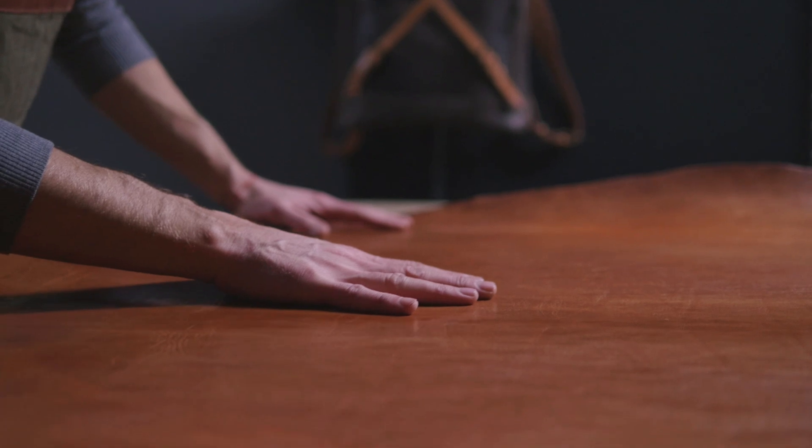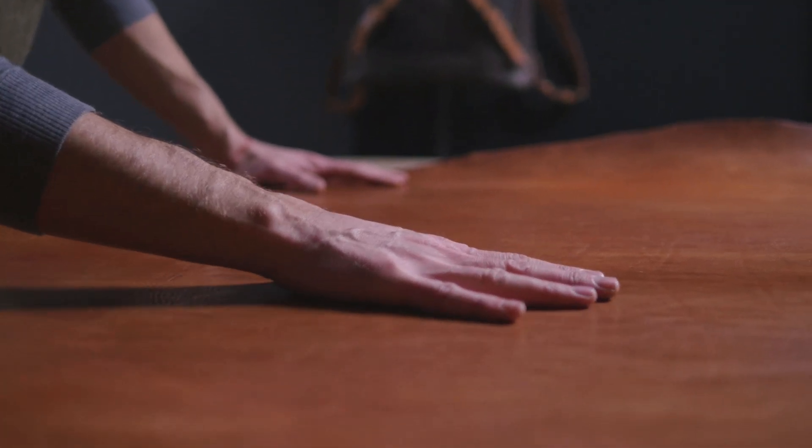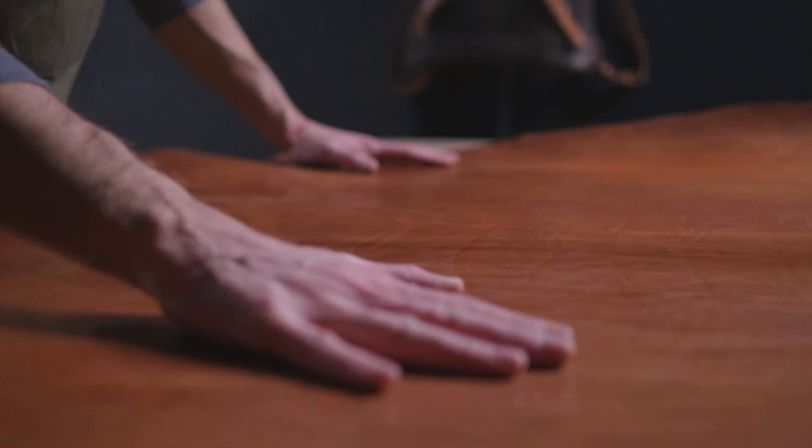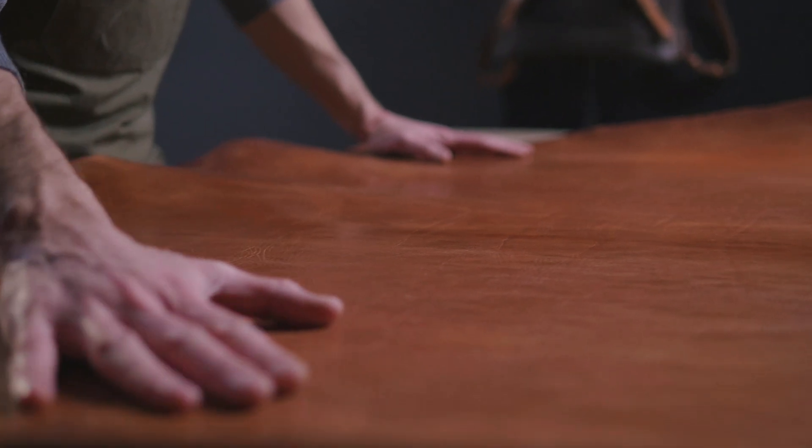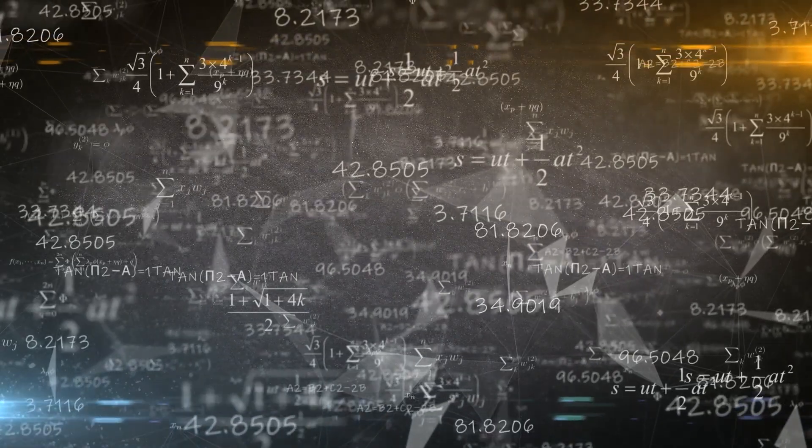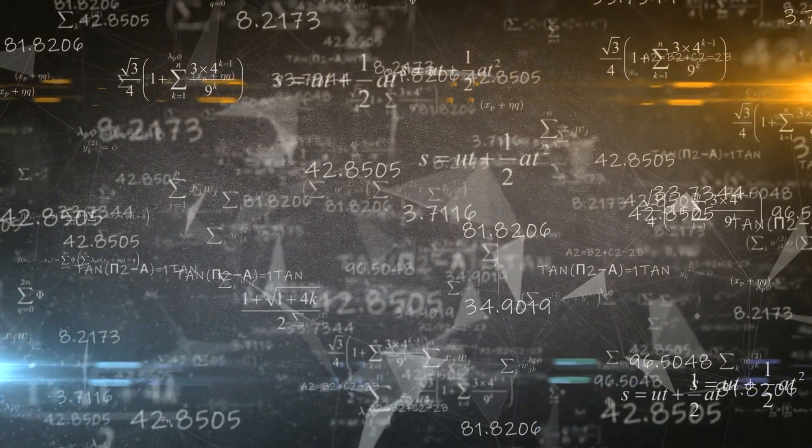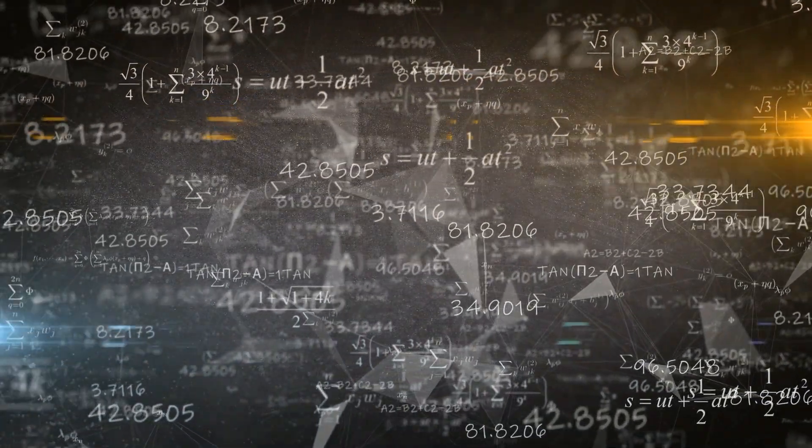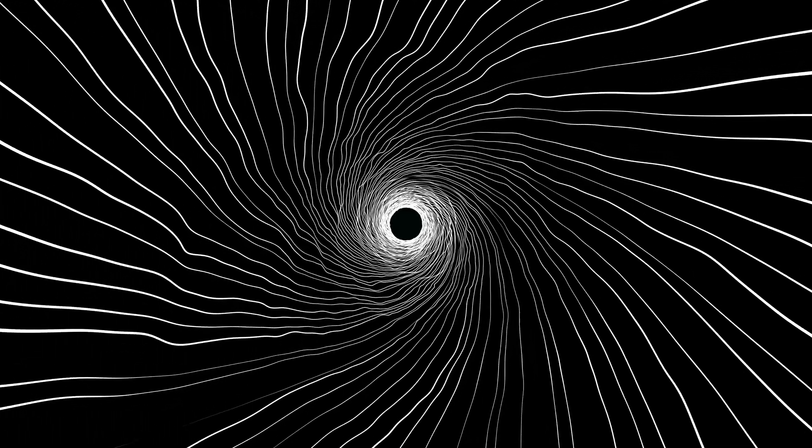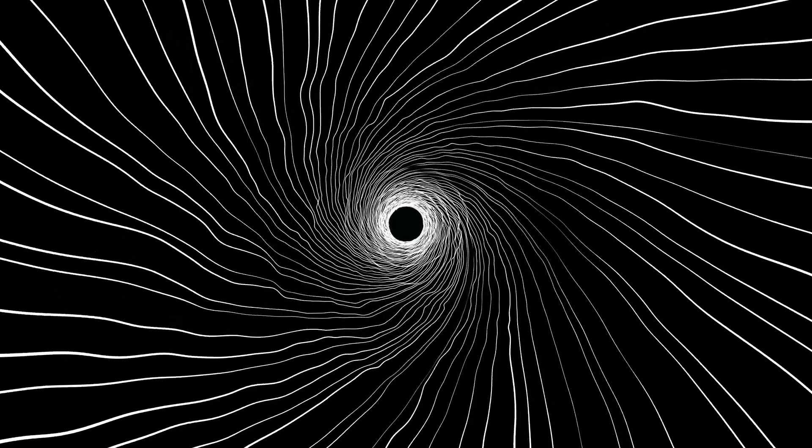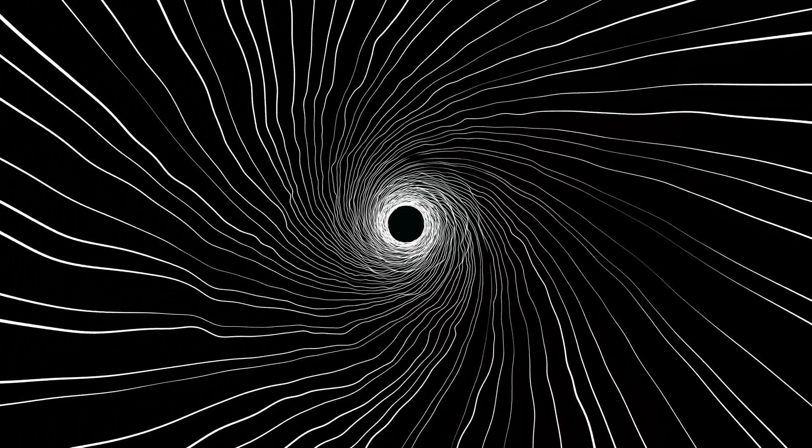First and foremost, what does a flat universe even mean? It doesn't imply that the universe is a two-dimensional sheet. Instead, flat in this context refers to the geometry of space itself. In a flat universe, the rules of Euclidean geometry hold true on the largest cosmic scales. That means parallel lines will never meet. The interior angles of a triangle add up to 180 degrees and so on.